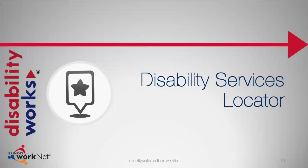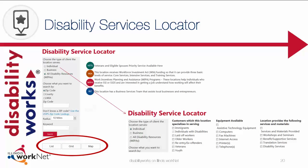The Disability Services Locator is a tool to help you find physical locations with services that could assist you. The default lookup is for all disability resources and will include WIPA work incentive coordinators. There is an option to drill down for individual services or business services. You may search by zip code, county, or local workforce area. Once you find a location, you can select View Map, which will open up Google Maps so that you can get directions.